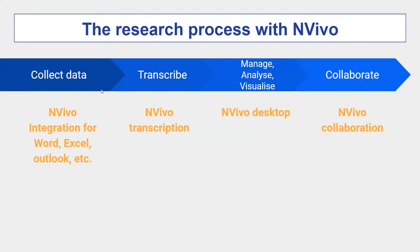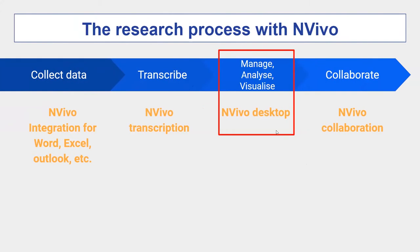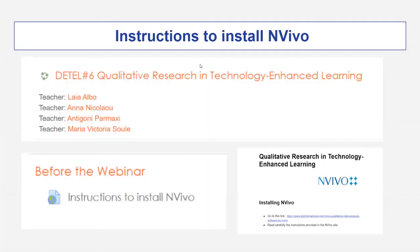The research process with NVivo: NVivo helps you in the collection of your data by integrating Word, Excel, and Outlook. NVivo also has a transcription tool. With the NVivo desktop you can manage, analyze, and visualize your data. There is also NVivo Collaboration if you want to collaborate with colleagues or your supervisor. In today's presentation, we will focus on the NVivo desktop — showing the basic features of how to manage, analyze, and visualize your data. Instructions to install NVivo were uploaded on the Moodle platform.